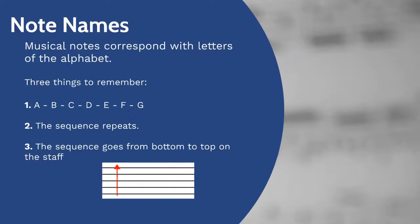In music, the notes correspond with the letters of the alphabet. We have seven notes, and they're labeled A, B, C, D, E, F, and G. Once the sequence is finished, it repeats. The notes are labeled from the bottom of the staff up. Remember these three points moving forward.